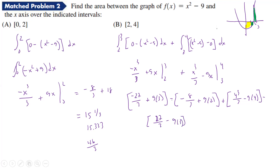Now we plug all of that into the calculator. So: (-27/3 + 27) - (-8/3 + 18) + (64/3 - 36) - (27/3 - 27). Working that all out, we get a clean answer of 6. So the area over the interval from two to four is 6.